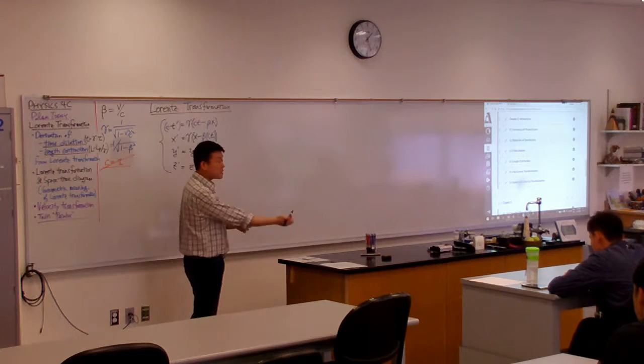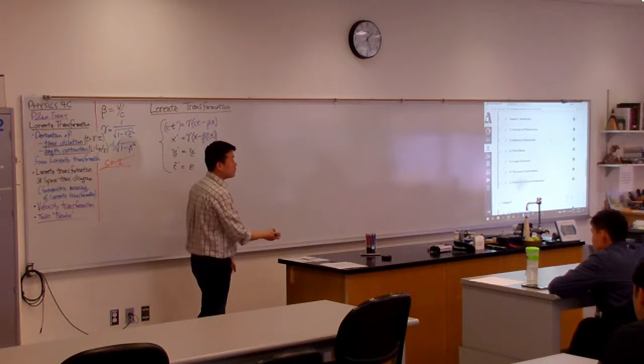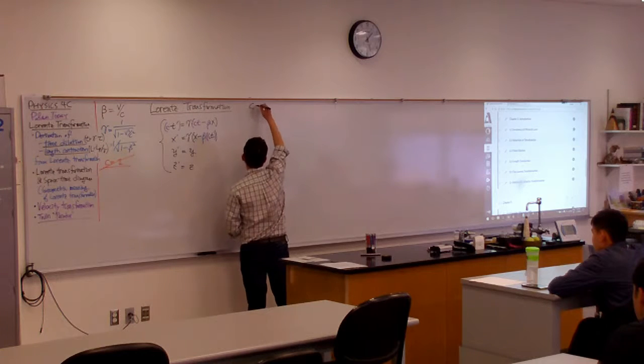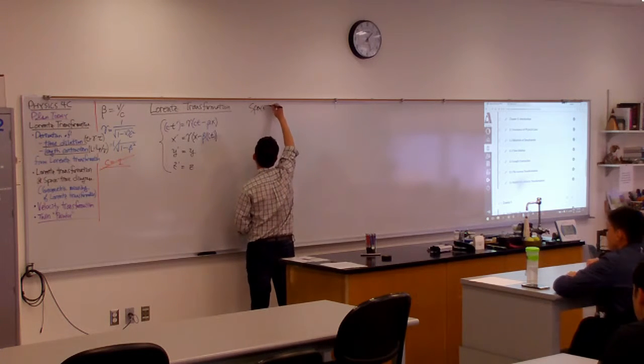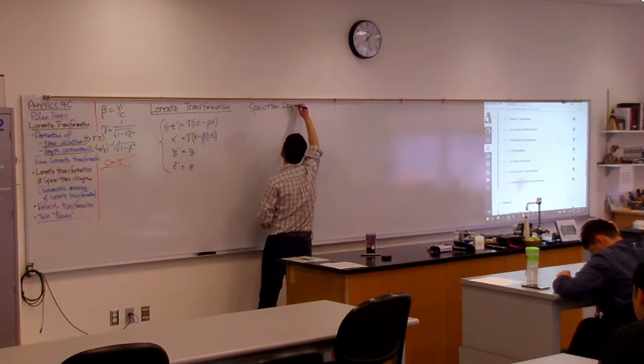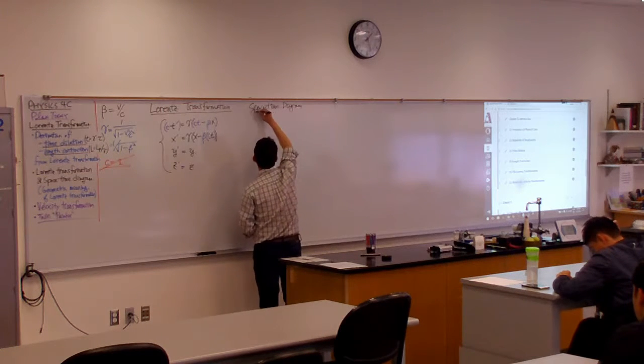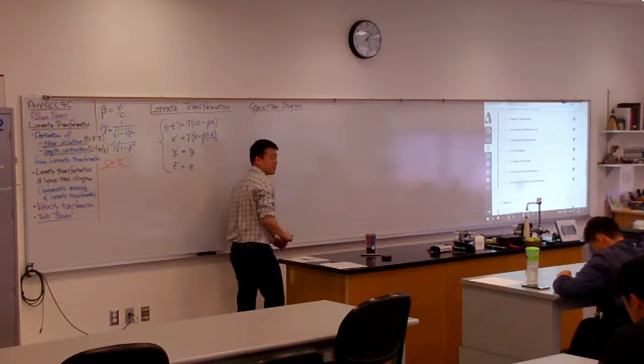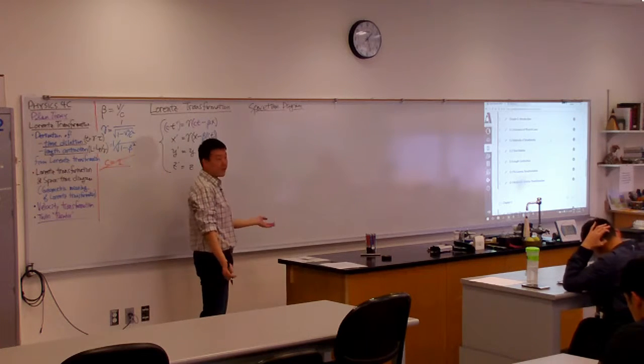So you saw a little bit of space-time axis diagram last time. This is a space-time diagram. It's kind of what it sounds like - it's a diagram of space and time. Space on one axis, time on the other axis.